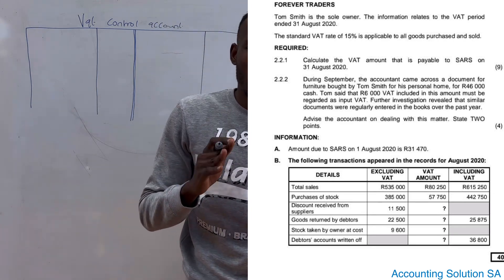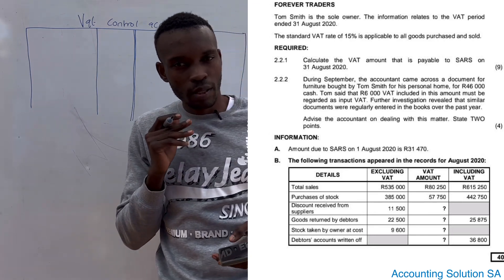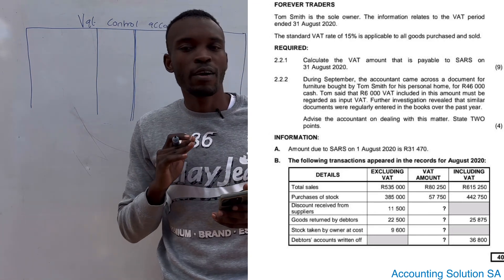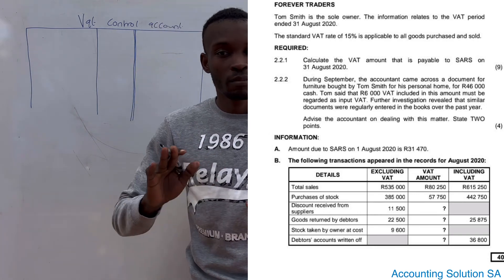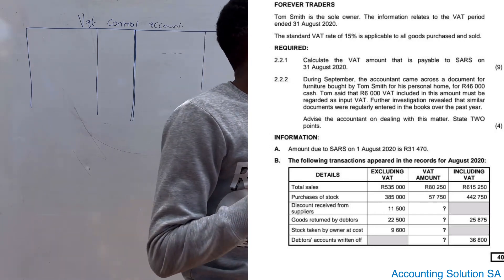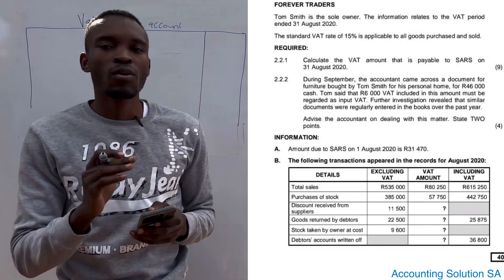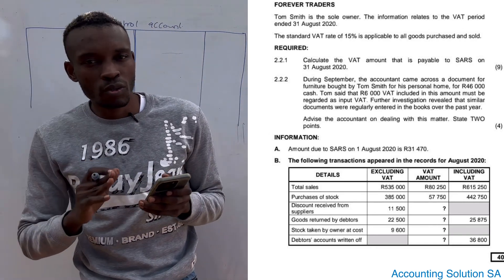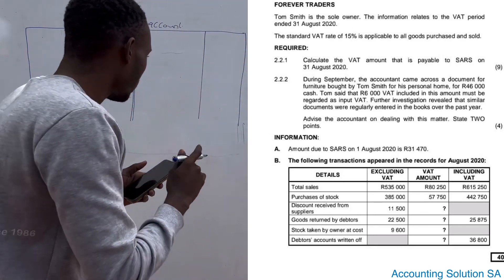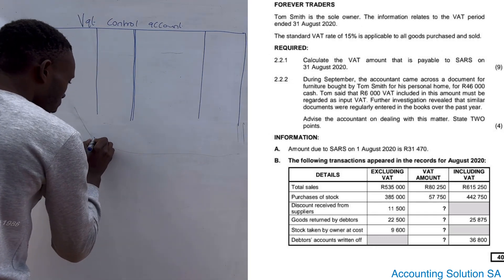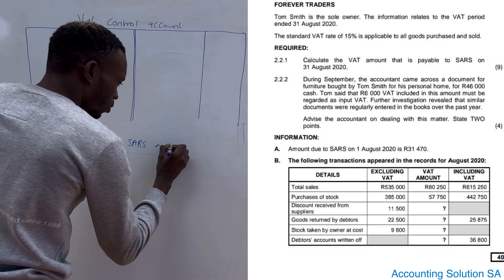Hi, great students. In this video we are going to do a VAT control account. This video is part four or part five of VAT control account, so I come with another question paper so that I can teach you something different. Firstly, let's start by analyzing what the VAT control account is all about. When we talk about VAT control account, we are talking about the calculation of VAT — to determine whether the amount is due to SARS or due to us.